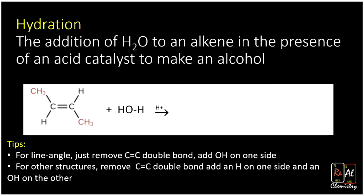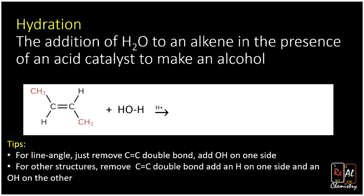We have our H2O, our alkene — just our carbon-carbon double bond containing molecule — and an acid catalyst. The catalyst you need to get this reaction going is H+. We add the OH on one side and the H on the other. When you add an OH to an alkene, what you get out is an alcohol. For line angle structures, remove the carbon-carbon double bond and add OH to one side. For other structures, remove the double bond and add H on one side and OH on the other. For line angle structures the hydrogen is assumed.